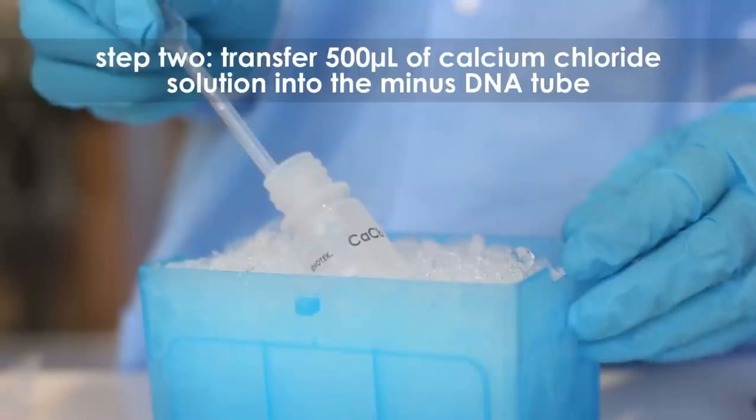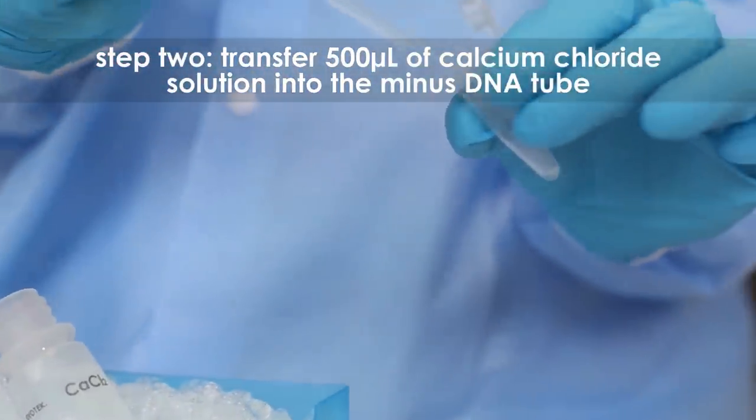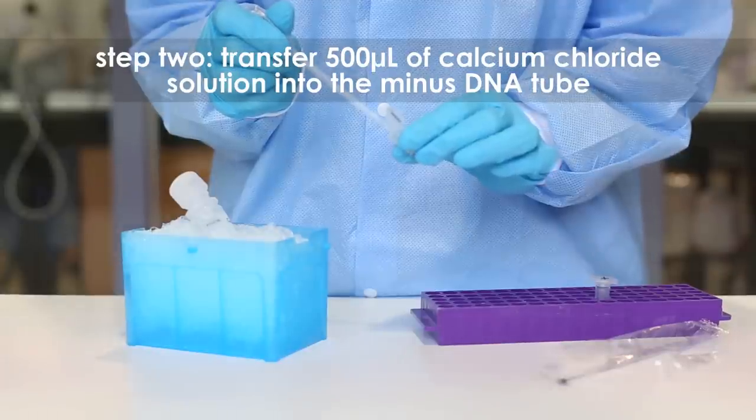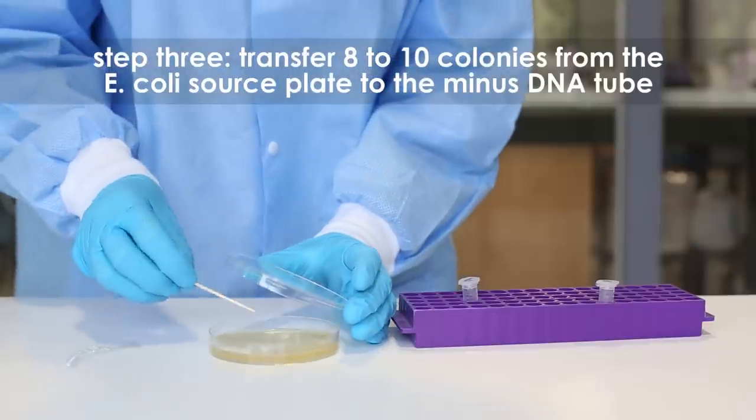Step two: transfer 500 microliters of ice-cold calcium chloride solution into the minus DNA tube using a sterile 1 milliliter pipette. Step three: using a toothpick,